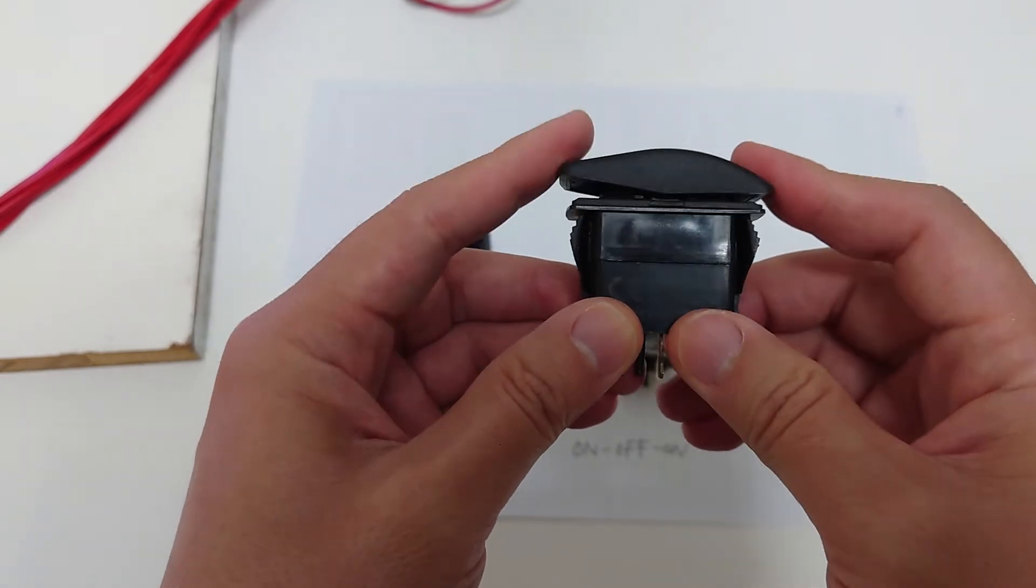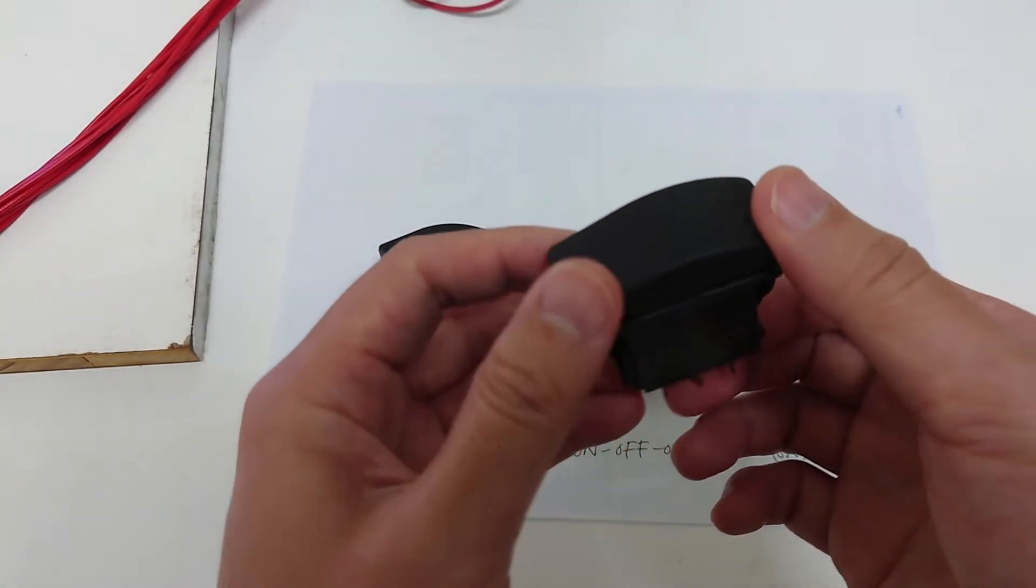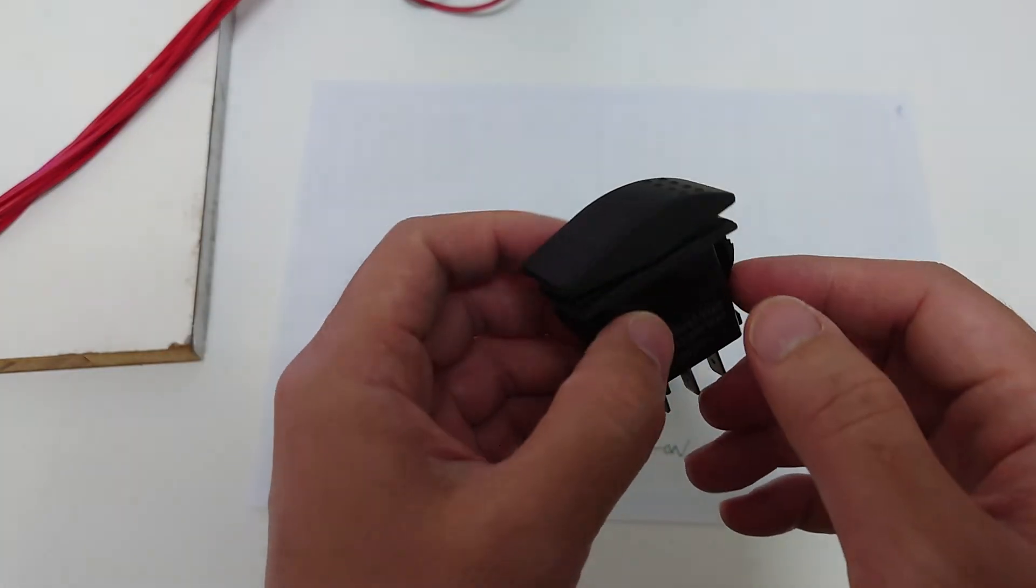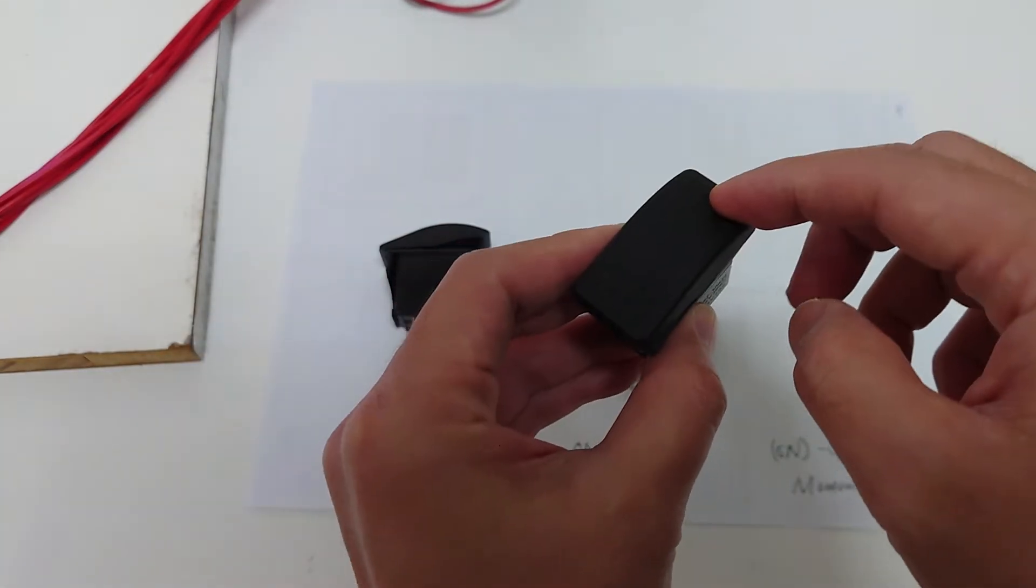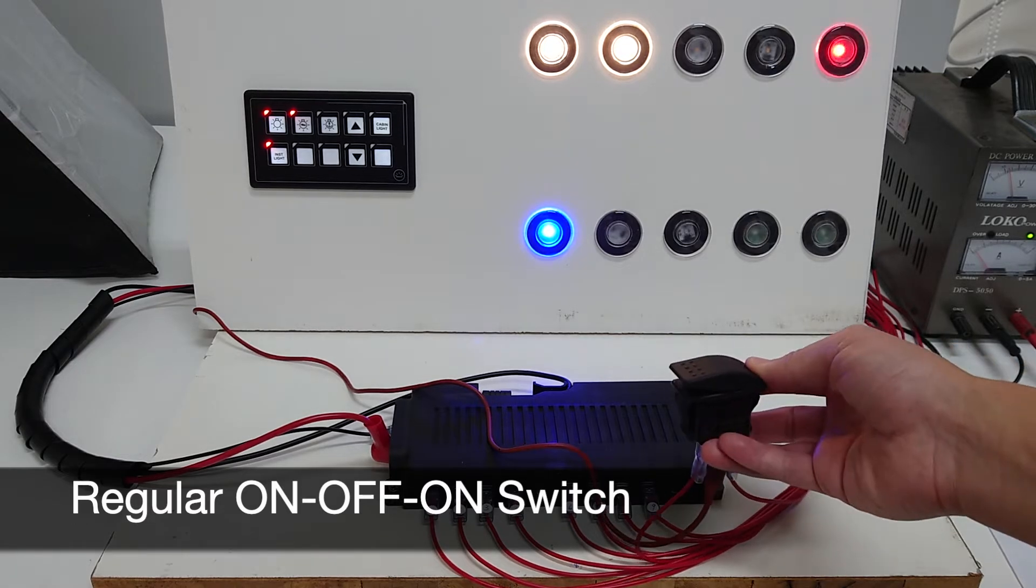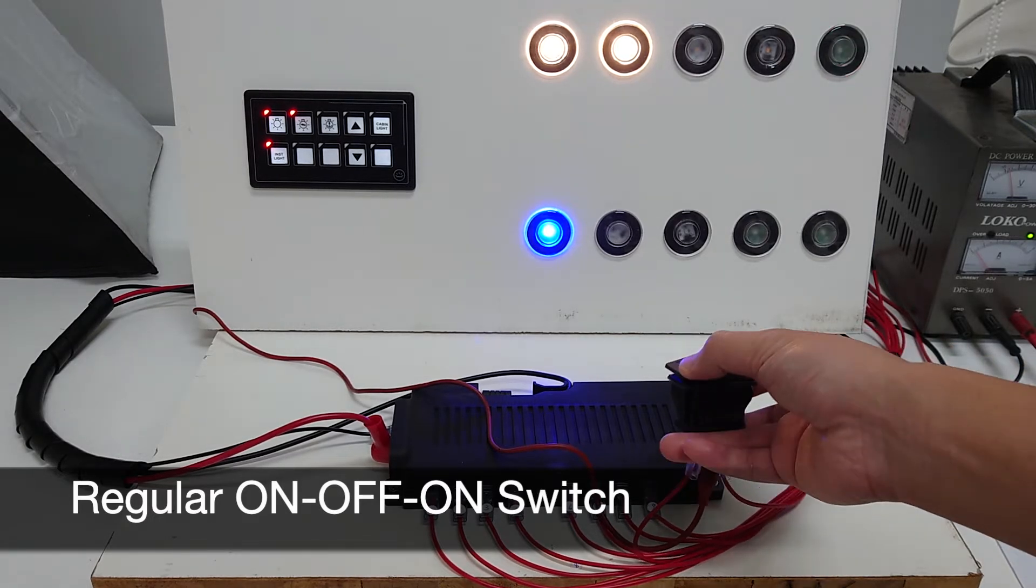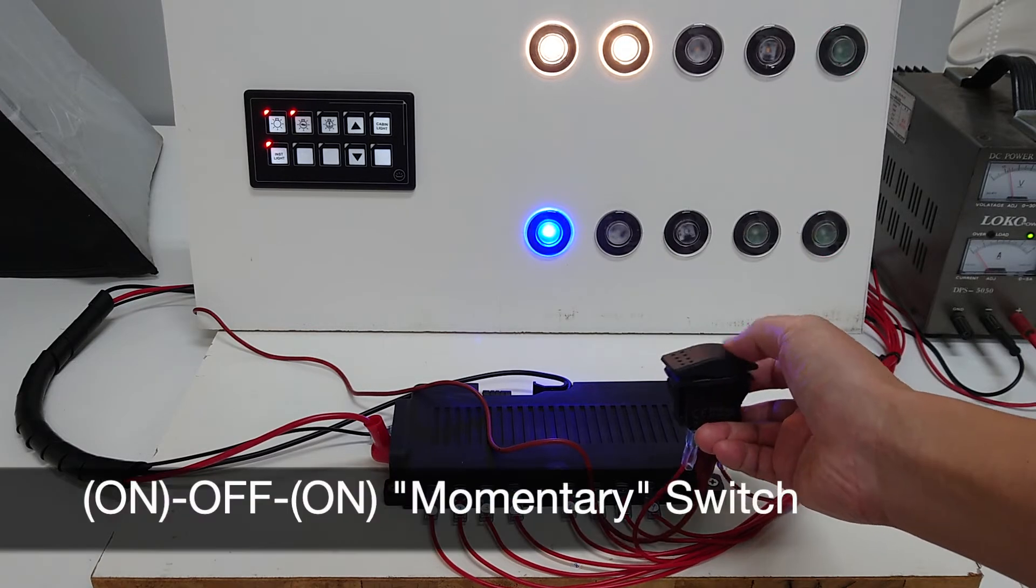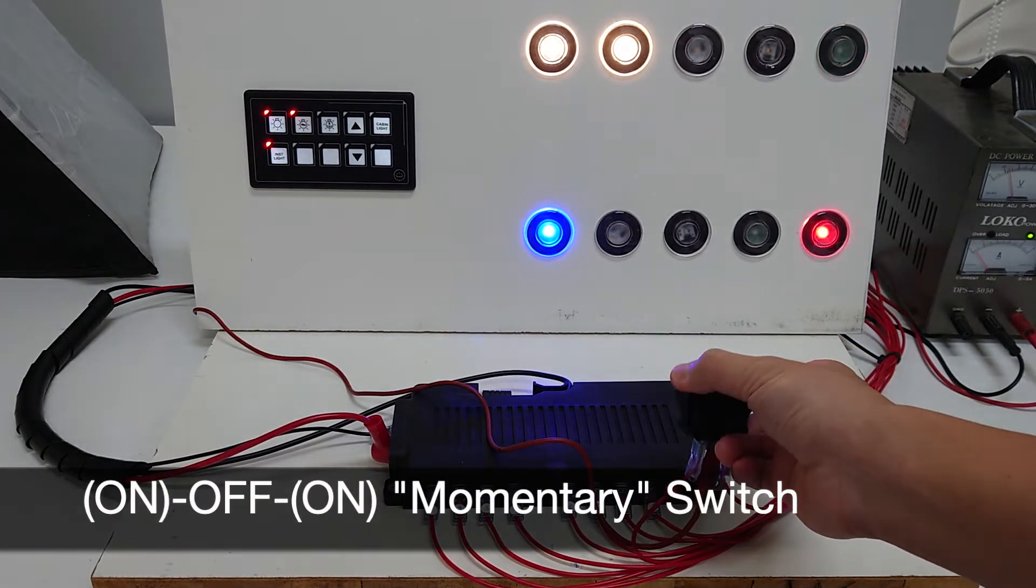This is suitable for applications where you want it to be on only when you're pressing. The on-off-on switch will act like this: when you press one side the first load is on, and press the other side the other load is on. This is momentary, so when you release it, it will return to the off state.